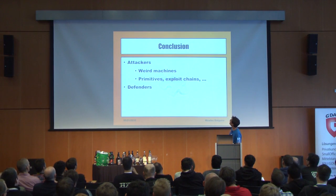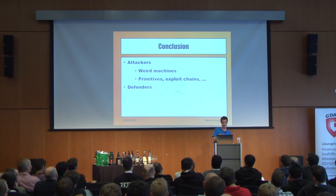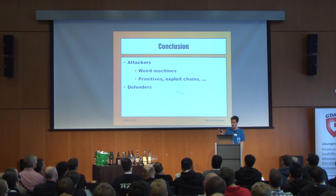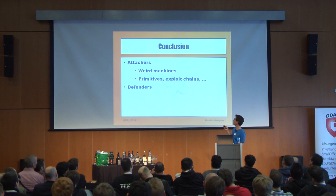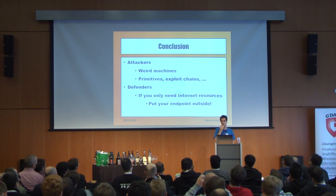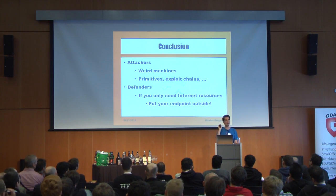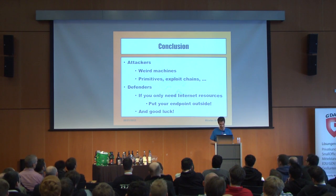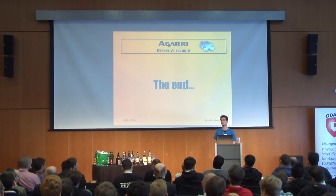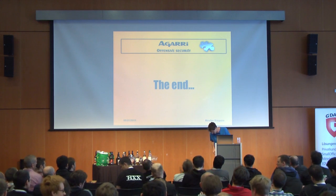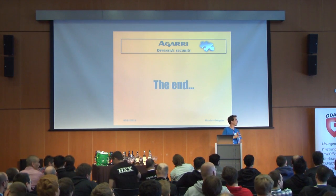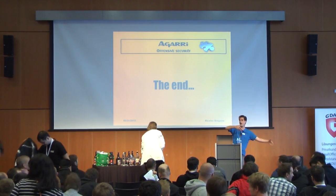Quick conclusion: for attackers, welcome to the world of web machines — like everything in InfoSec, once you're deep inside it you'll think about primitives and exploit chains. Feel free to discuss tonight. For defenders: if you really need to access only public resources, put your outbound proxy outside — on EC2, on Cloudflare — do not take any risk if it's not necessary. And outside of that, good luck. Thank you for listening. I'm available for questions now, and later tonight and tomorrow.